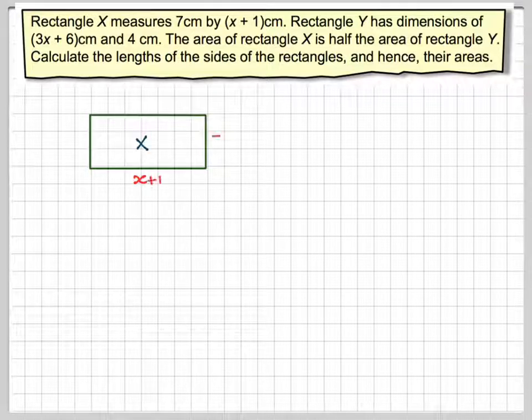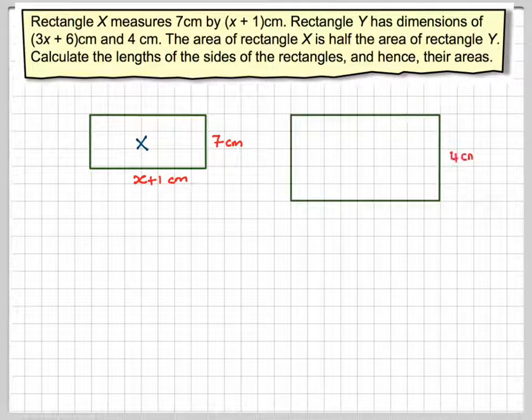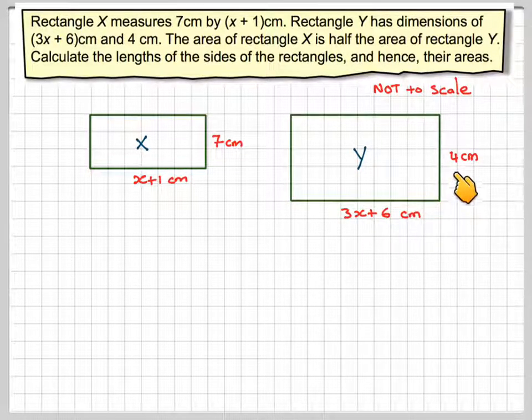OK, we should begin this with a diagram. So there is Rectangle X which says it's (x + 1) and 7. And here is Rectangle Y. Not to scale remember, this is (3x + 6)cm and this is 4cm.